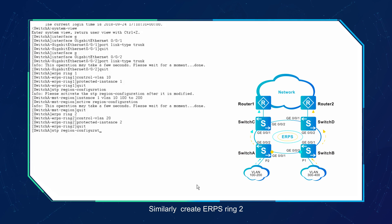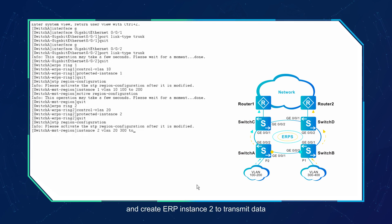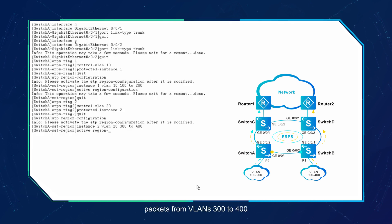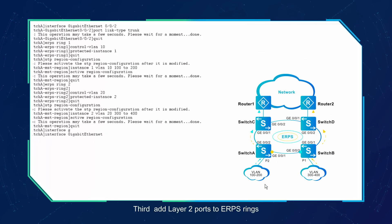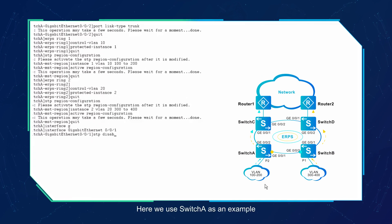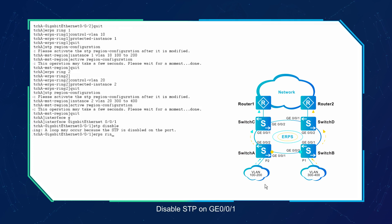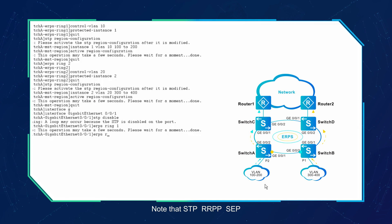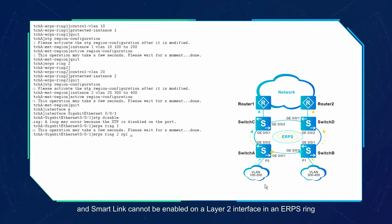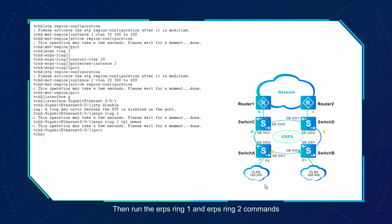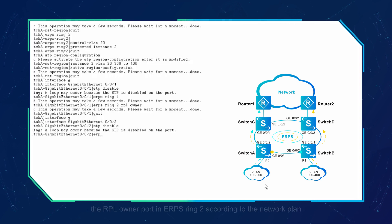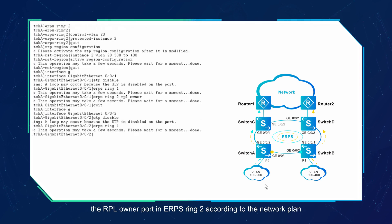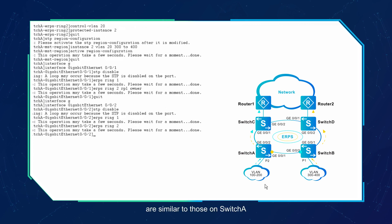Similarly, create ERPS ring 2, set the control VLAN ID to 20, and create ERP instance 2 to transmit data packets from VLANs 300 to 400. Third, add layer 2 ports to ERPS rings and specify port roles. Here we use switch A as an example. Disable STP on GE0/0/1. Note that STP, RRPP, SCP, and SmartLink cannot be enabled on a layer 2 interface in an ERPS ring. Then run the ERPS ring 1 and ERPS ring 2 commands to add the port to both ERPS ring 1 and ERPS ring 2. In addition, configure the port as the RPL owner port in ERPS ring 2 according to the network plan. The configurations on other devices are similar to those on switch A.